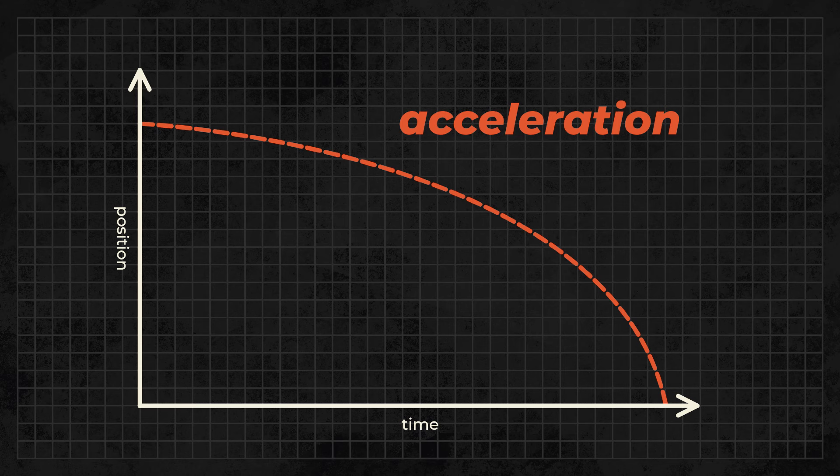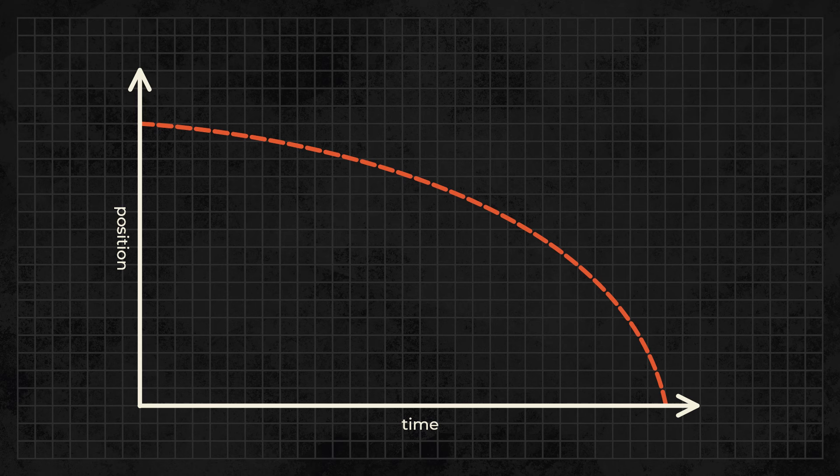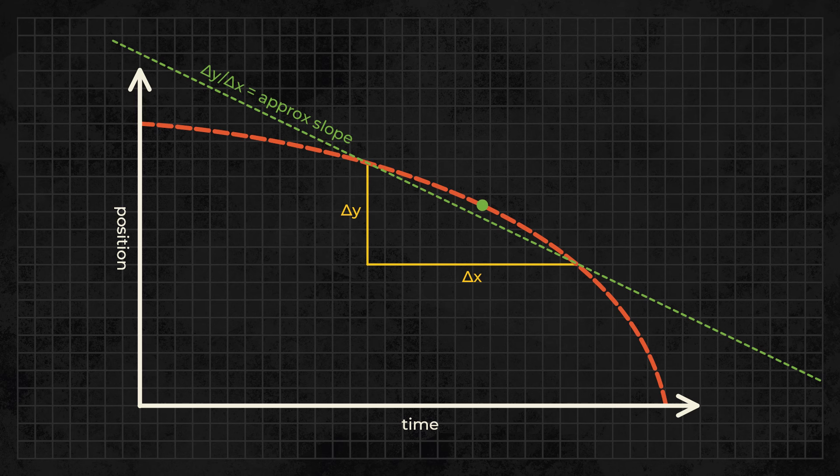If the line is curved, it means that the object is accelerating, because the velocity of the object, which is the slope of the curve, is changing. If you need to find the velocity of the object at a given point on a curved graph, you can divide the change in y value by the change in x value around that point.